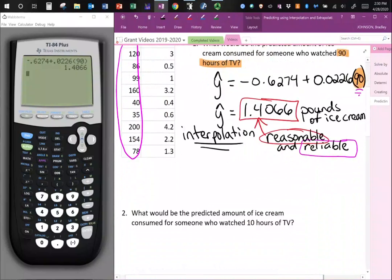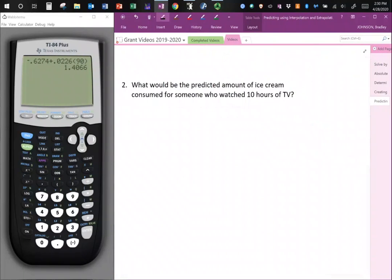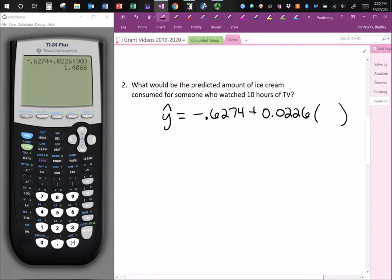Let's do another one. What would be the predicted amount of ice cream consumed for someone who watched 10 hours of TV? So I'm going to rewrite my equation. Y hat equals negative 0.6274 plus 0.0226 multiplied by, now my new x value is 10 hours. So I am placing 10 in here in place of my x.